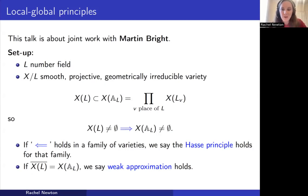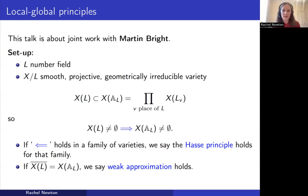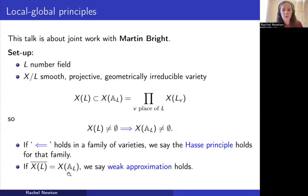The second example of a local-global principle I want to discuss is weak approximation. When you study the rational points on a variety, your first question is: are there any? And then if you know that there are some, you might be interested in how many points you have — are they abundant in some way? One way of measuring that is to ask whether weak approximation holds: rational points are dense in the adelic points, dense with respect to the product of all these v-adic topologies.